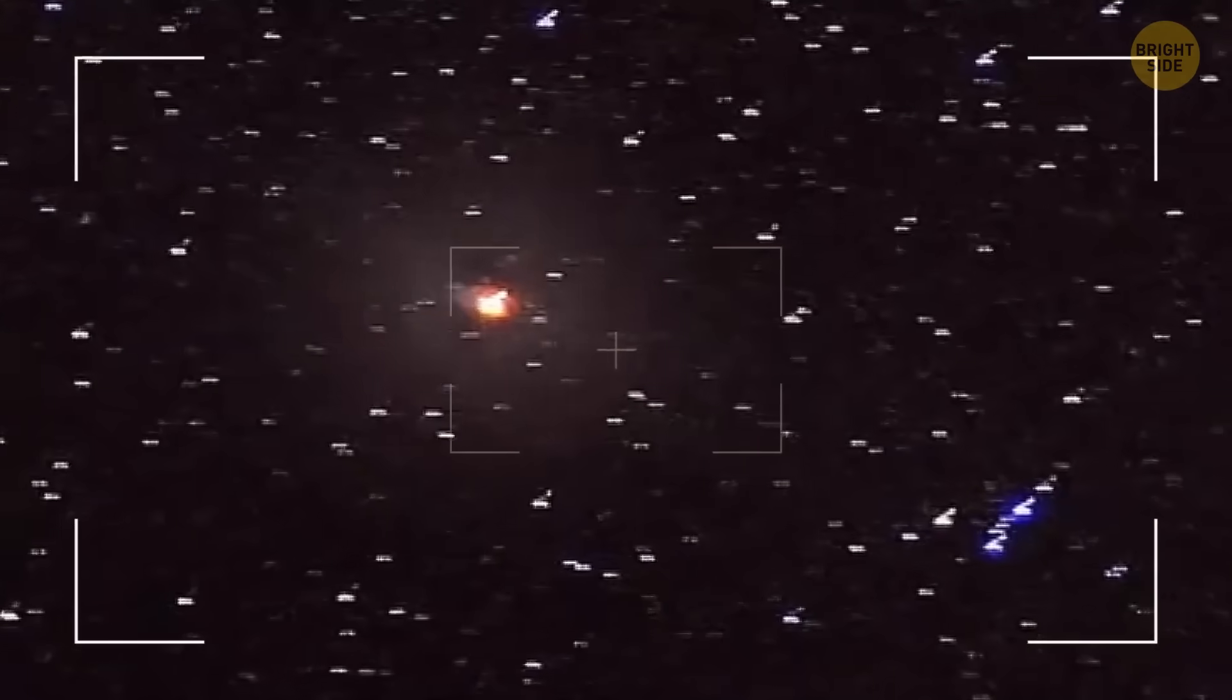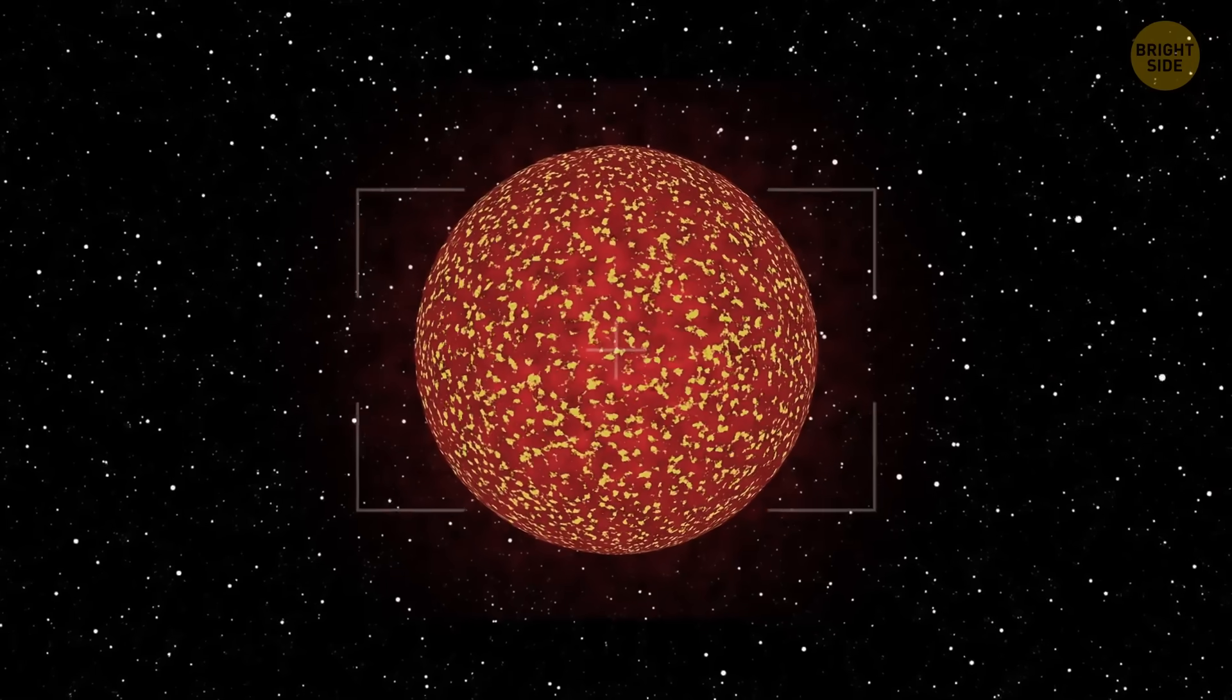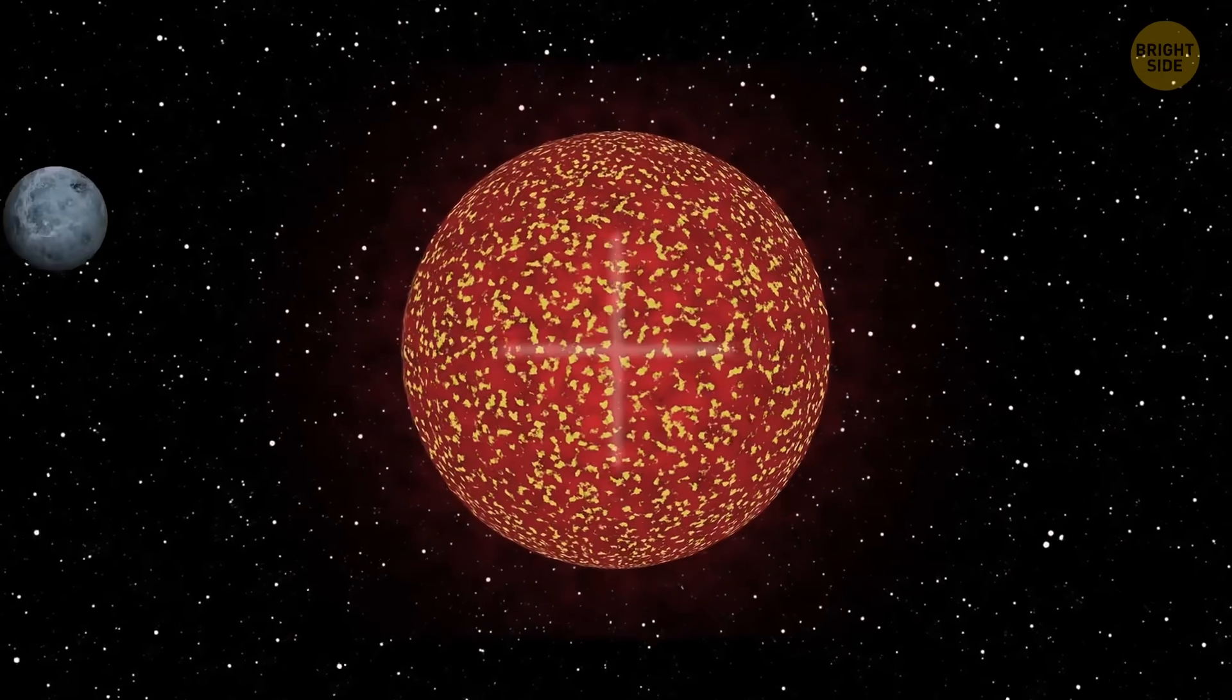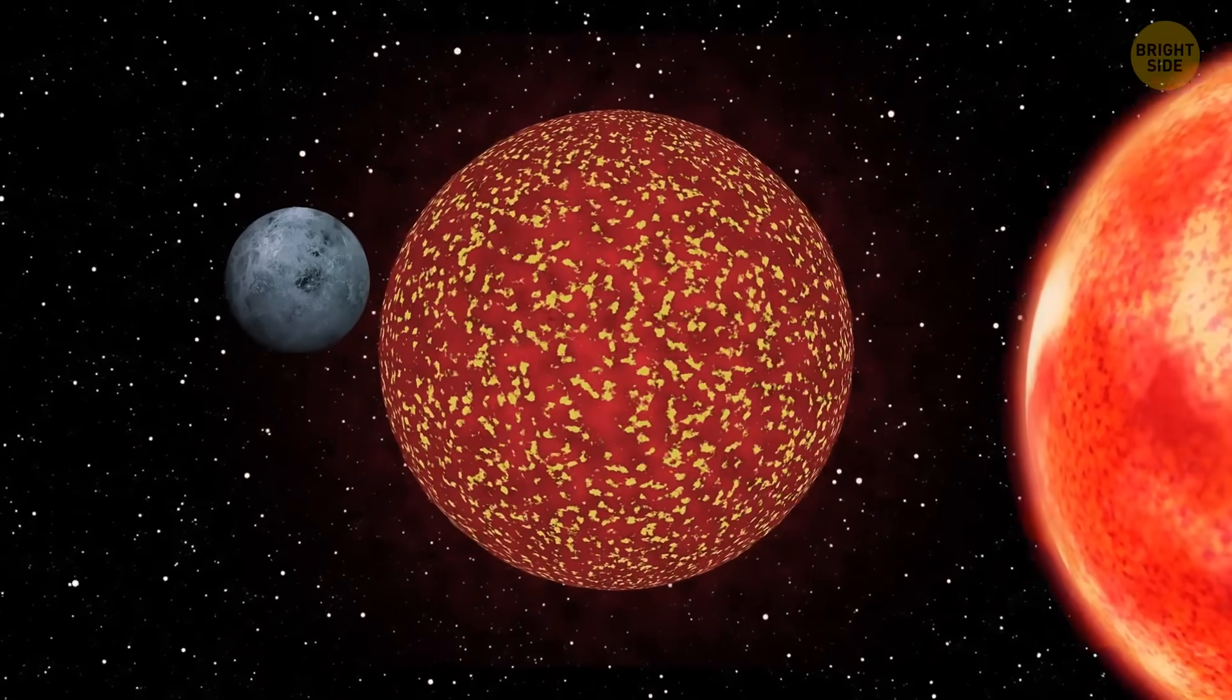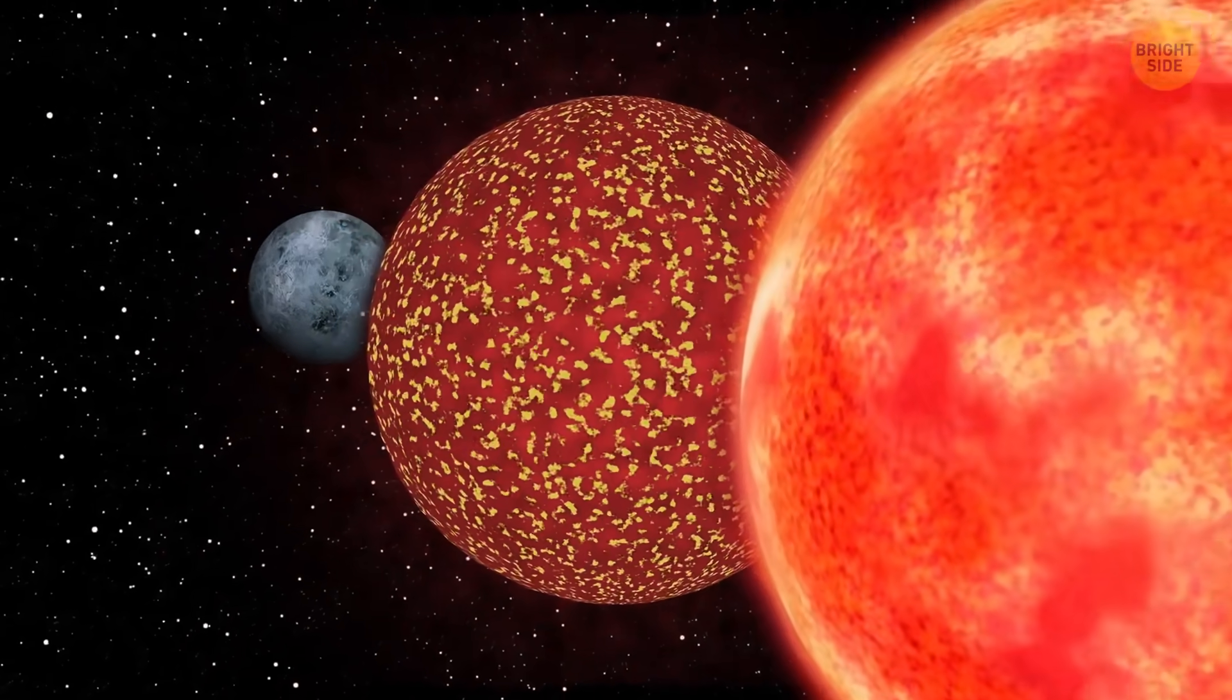At the moment, most scientists believe that WISE J1249 could either be a low-mass star or a brown dwarf. That's a type of star that is larger than a planet but too small to support nuclear fusion in its core, like our Sun does.